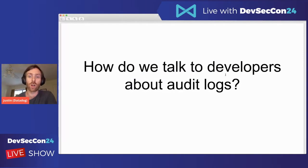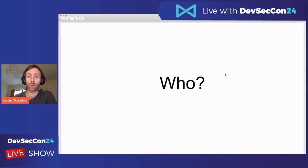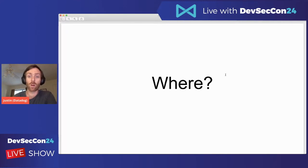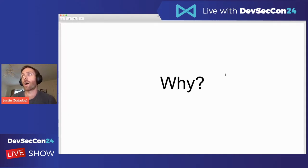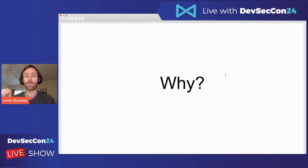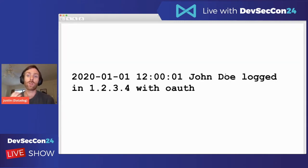So how do we talk to developers about audit logs? What can we suggest? I'm going to pose some very basic questions. We want to know: who is doing something — typically a user. What is that user doing? Where is it occurring from — maybe an IP address. When did it occur? And why? You may not always be able to answer why. Why did John Doe log in? But if your audit log says 'we locked this user out because they failed to log in five times,' that's your reason why. You may not have a why for every single log.